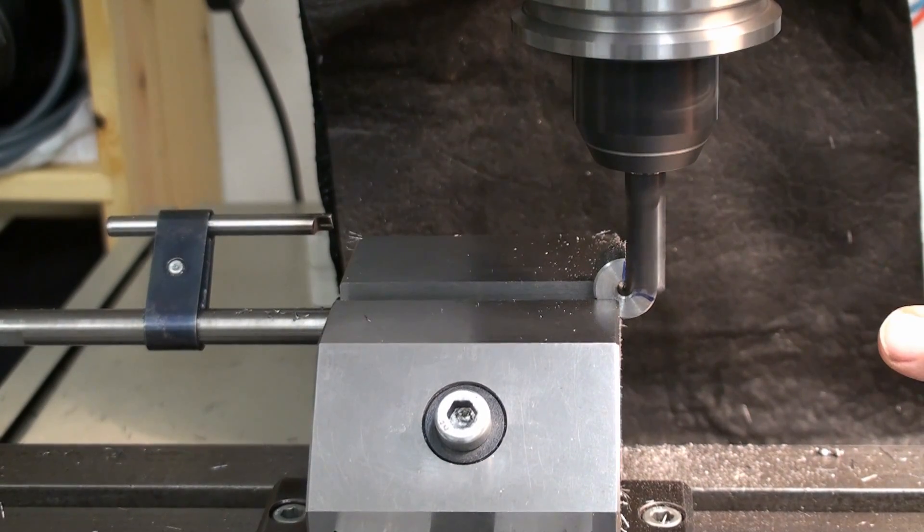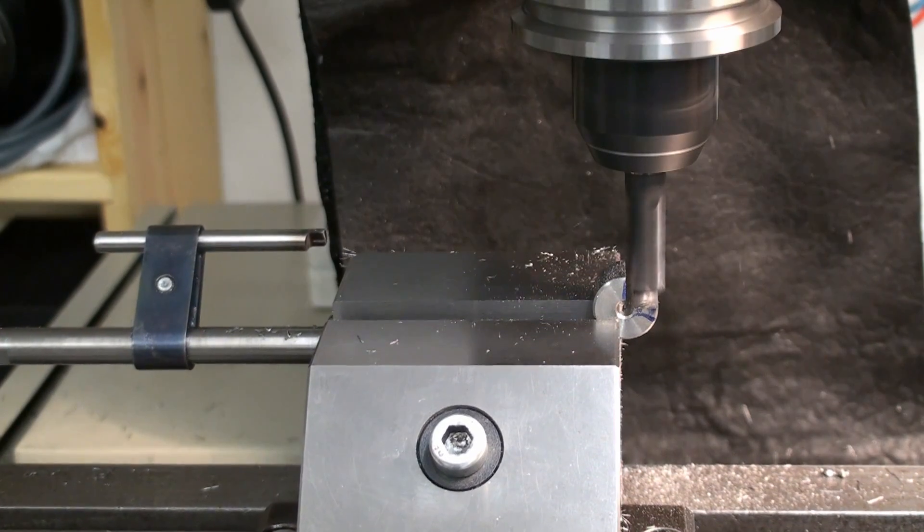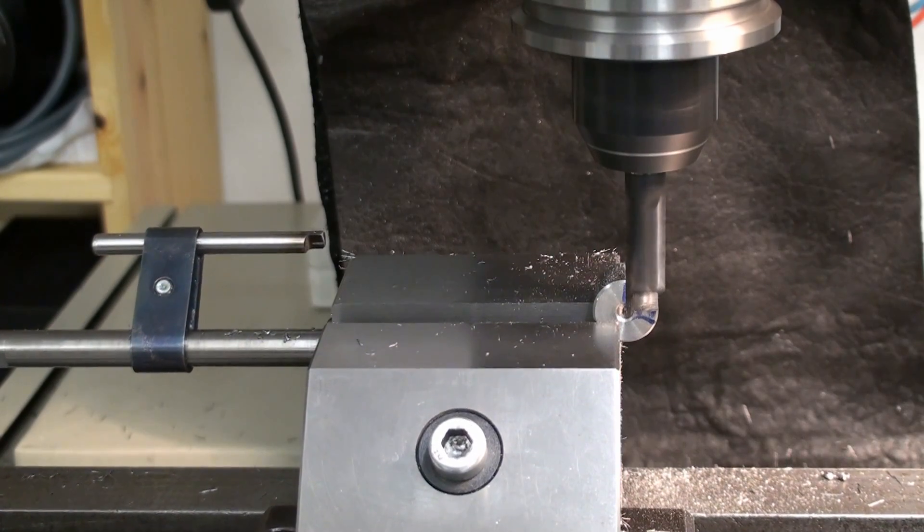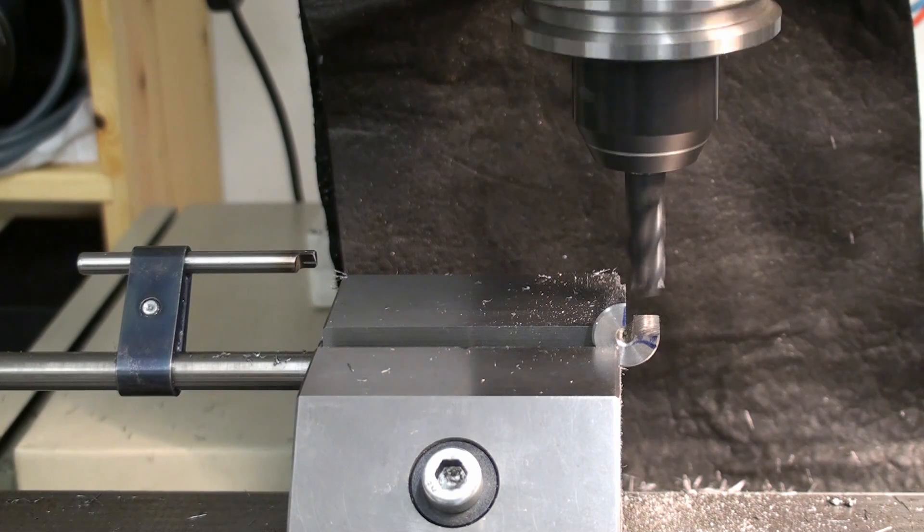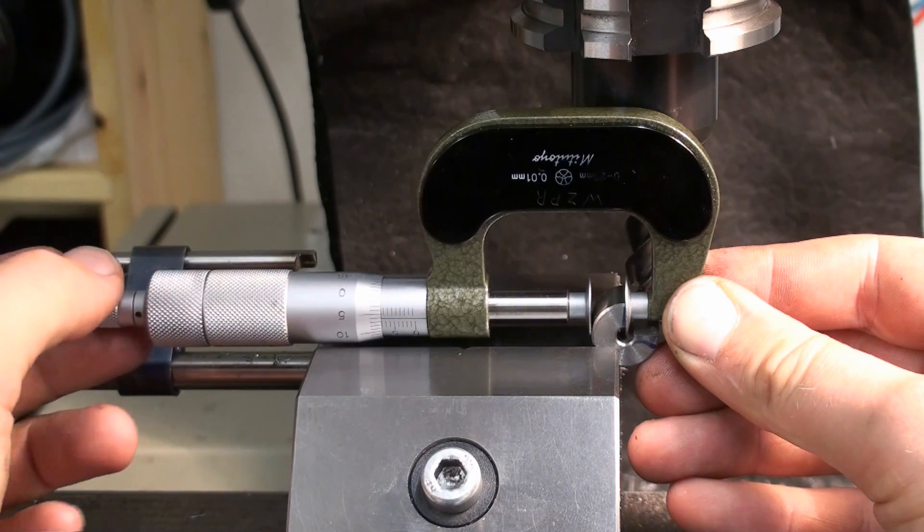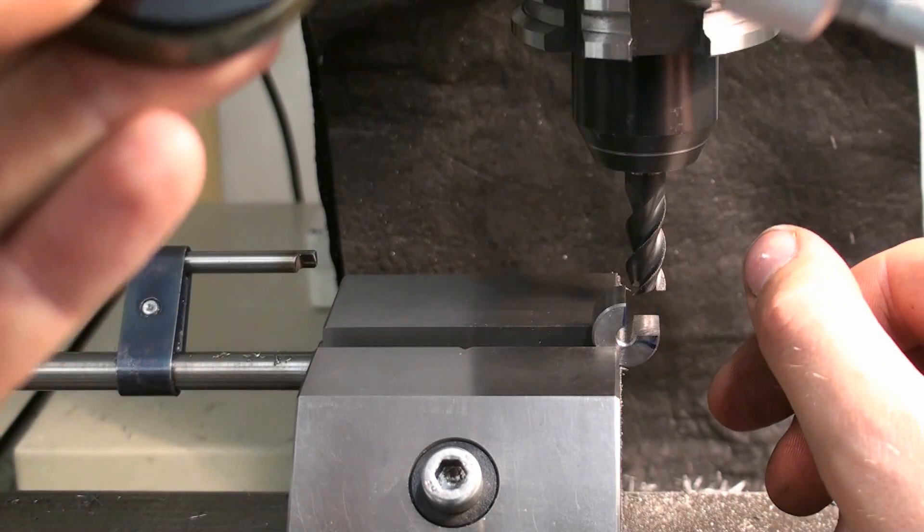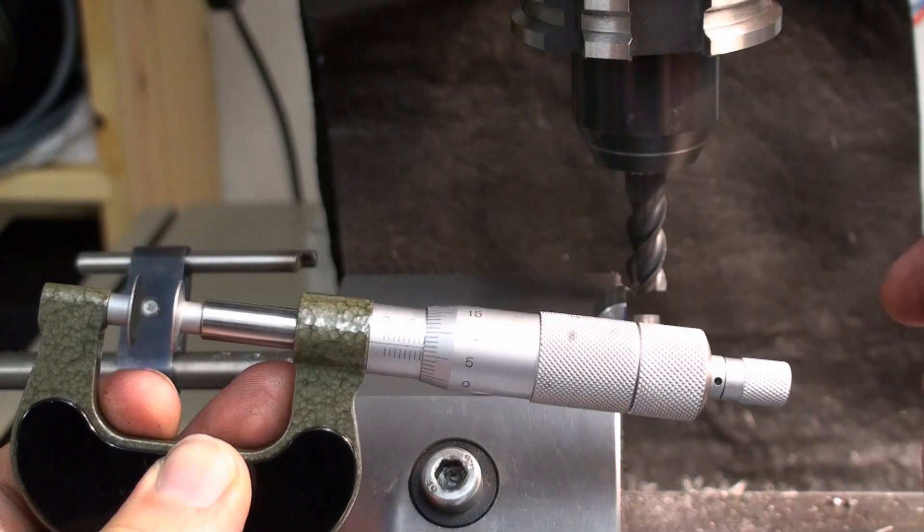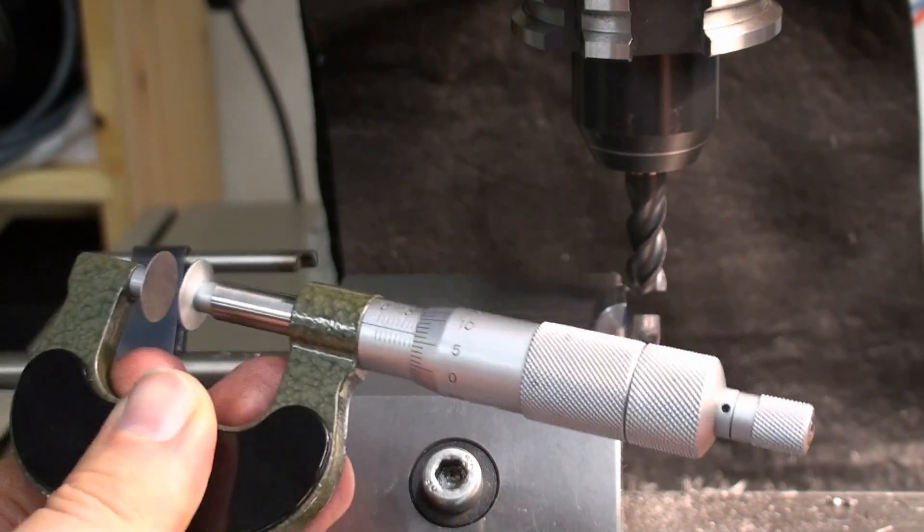And we take a spring pass, of course. Okay, and we're at 6.5 hundredths and then we will take a spring pass. That's 6.5 hundredths of a millimeter oversize.